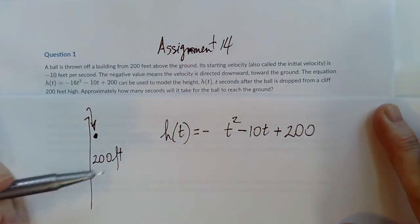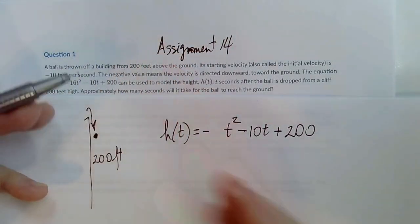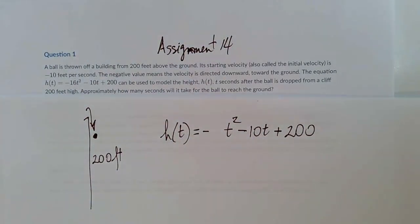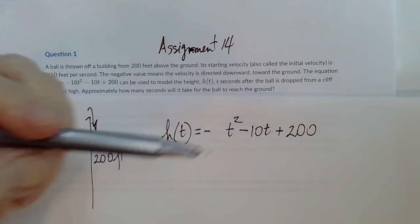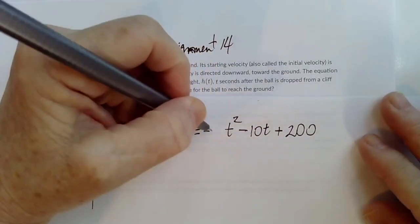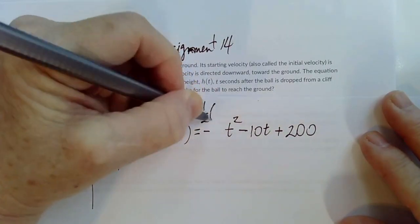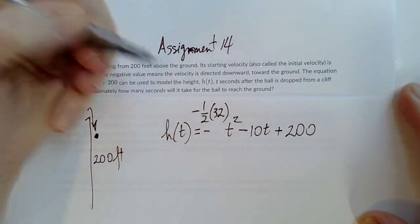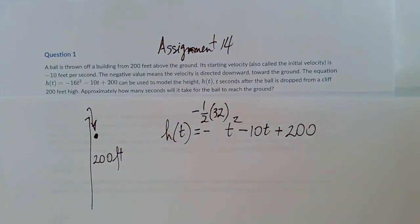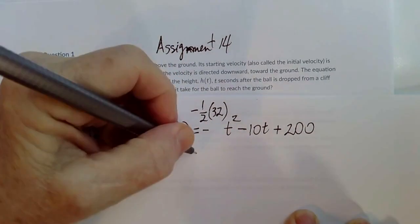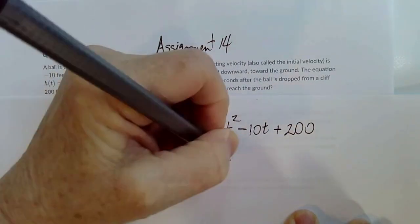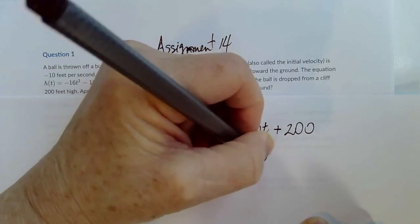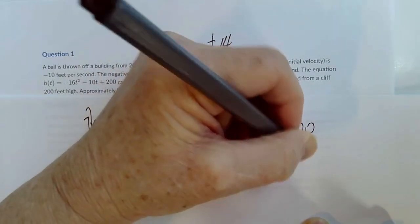And our other force is going to be acceleration due to gravity, which is also downward. So we're measuring height in a positive direction, so the gravity and the velocity are in the opposite direction. So we have negative 1 half times 32 feet per second per second, which is the English units for gravity. So we get negative 16 t squared minus 10t plus 200.